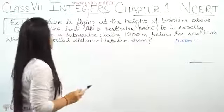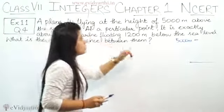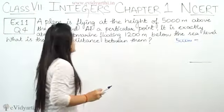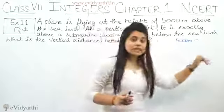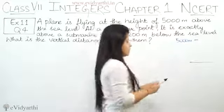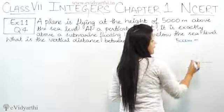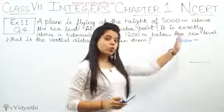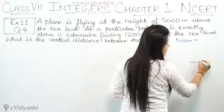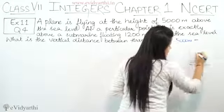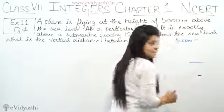Now, at a particular point, it is exactly above a submarine floating 1200 meters below the sea level. At this particular point, the plane is exactly above the submarine. And where is the submarine? That is below the sea level. If this is the sea level, it is under here.